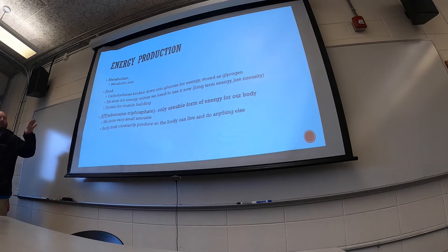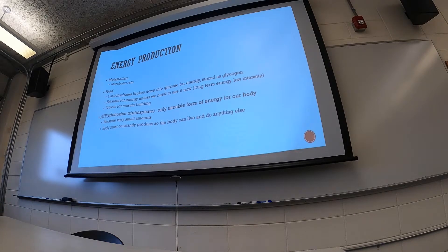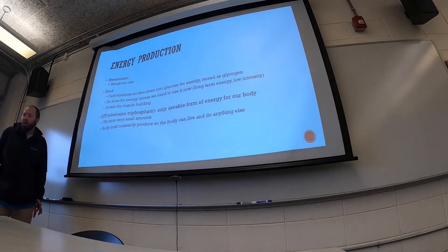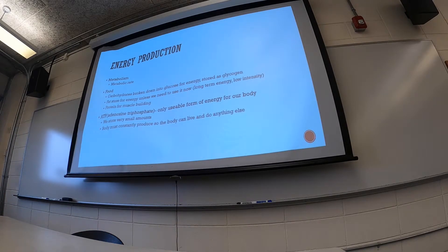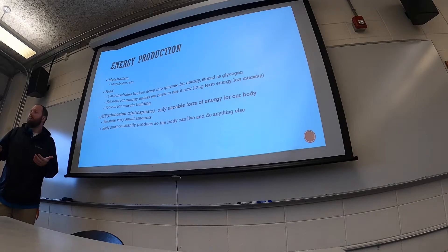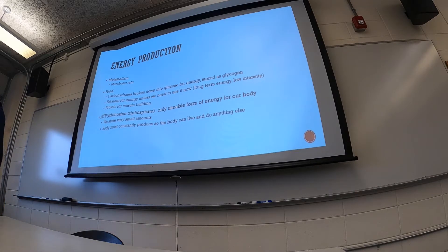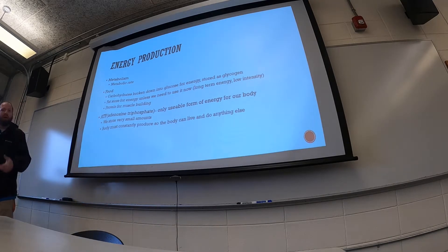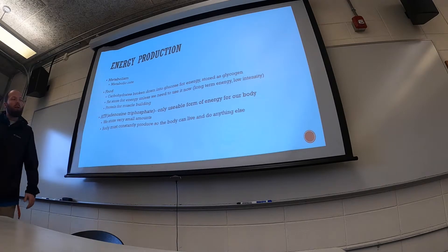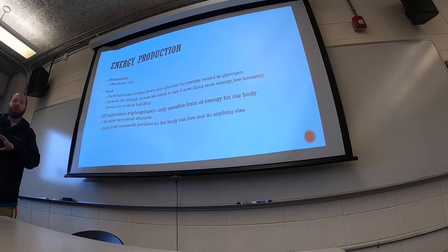Carbohydrates are used for energy only — they're an immediate energy system. When you eat carbohydrates, they're broken down into glucose, which is essentially table sugar. Your body doesn't differentiate: whether you eat a Twinkie or broccoli, both are broken down into glucose. The other things in broccoli — vitamins and minerals — are what make it healthier. We can store some glucose as glycogen, but not very much. Our body likes to use glucose as soon as it gets it.